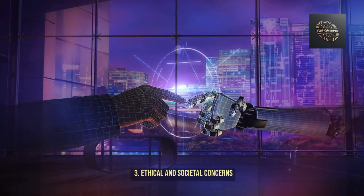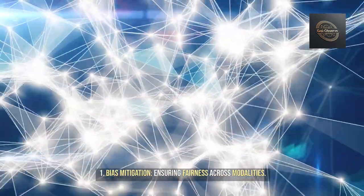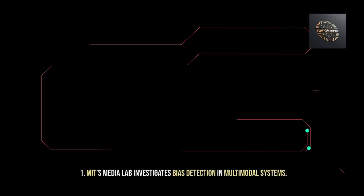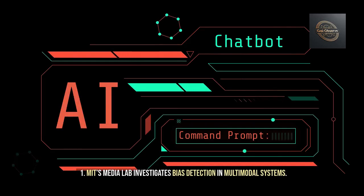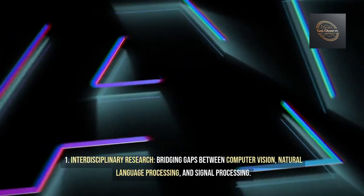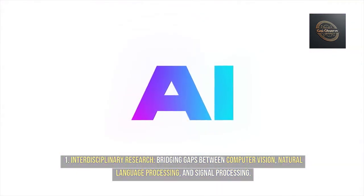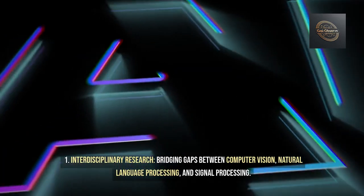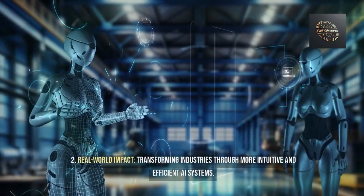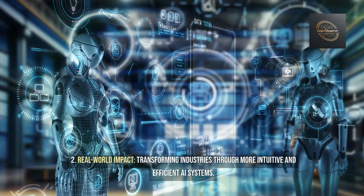Ethical and societal concerns: (1) Bias mitigation — ensuring fairness across modalities. MIT's Media Lab investigates bias detection in multimodal systems. (2) Privacy — protecting sensitive multimodal data. Opportunities include: (1) Interdisciplinary research — bridging gaps between computer vision, natural language processing, and signal processing. (2) Real-world impact — transforming industries through more intuitive and efficient AI systems.